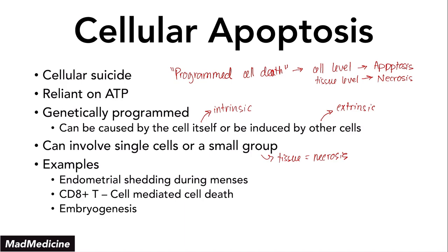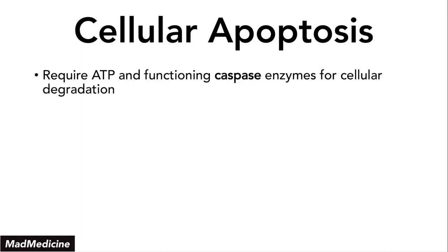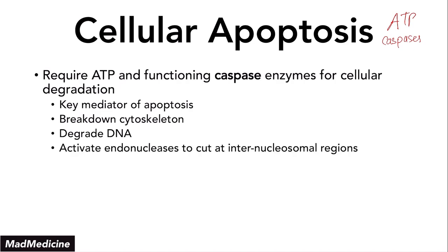Apoptosis requires ATP, but it also requires one additional thing: caspase enzymes. Caspases are a key mediator of apoptosis because they function to break down the cytoskeleton and also help with degrading DNA. The way the DNA degrades is a little different — caspases will activate endonucleases, and those endonucleases will cut at the internucleosomal regions.